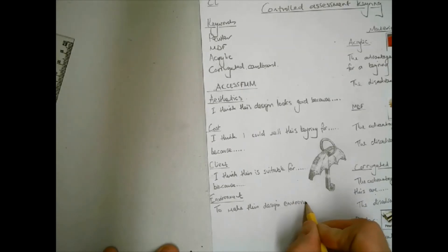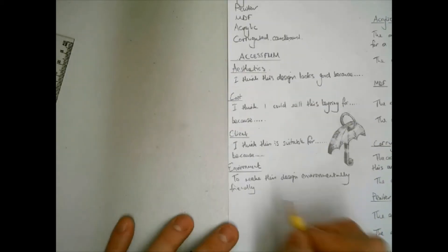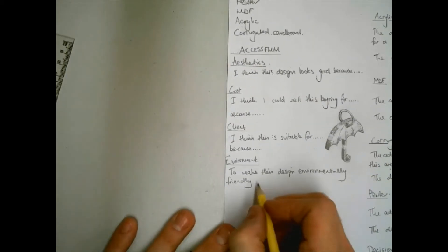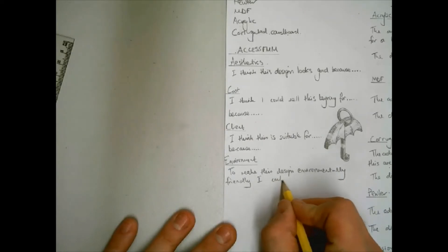An example for my design would be I will use recycled materials to make the keyring because it means less rocks need to be dug up. This will reduce the product's carbon footprint. Carbon footprint just means the total greenhouse gas emissions caused by an individual or a product.